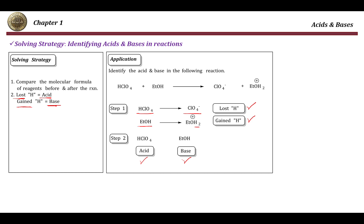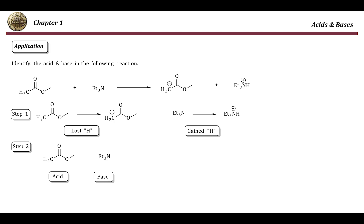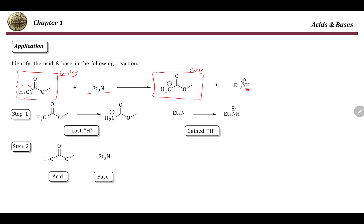Here is another example with more complicated organic structures. Comparing the structure of this compound to its product, I can clearly see that this compound actually lost one hydrogen and became CH2 minus — so this is losing H+, making it the acid. Triethylamine accepted H+, so this is gaining H+, making it the base.